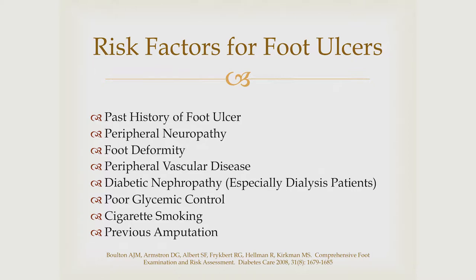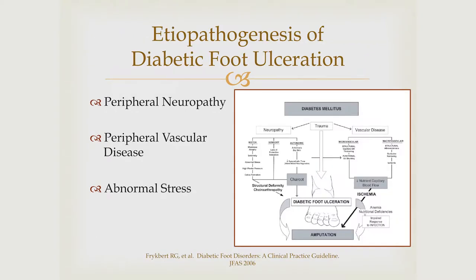Just kind of an overview — a lot of this will coincide with Dr. Prasad's earlier talk. The past history of a foot ulcer is a huge indicator of future foot ulcerations and amputation. Peripheral neuropathy is major. Deformities, PVD, nephropathy, especially dialysis, are major risk factors as Dr. Prasad's last talk alluded to. Poor glycemic control, cigarette smoking, and history of prior amputation are also significant.